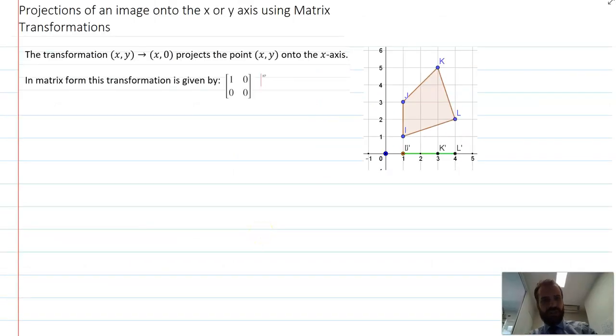So we run through each of those in turn really quickly. The transformation (x,y) to (x,0) projects the point (x,y) onto the X axis. This is what we can do here for our matrix transformation. We're just taking point (0,1) and making it (0,0). So this point projects to here, this point projects to here, this point projects to here, and that point projects to there.